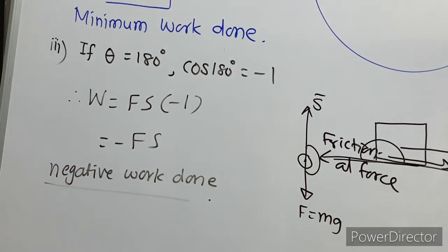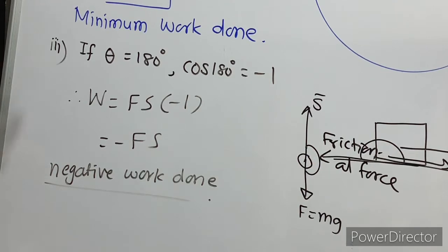So there are three cases: when θ = 0, work done is maximum; when θ = 90°, work done is minimum (zero); and when θ = 180°, it is called negative work done. We will now move to the next part.